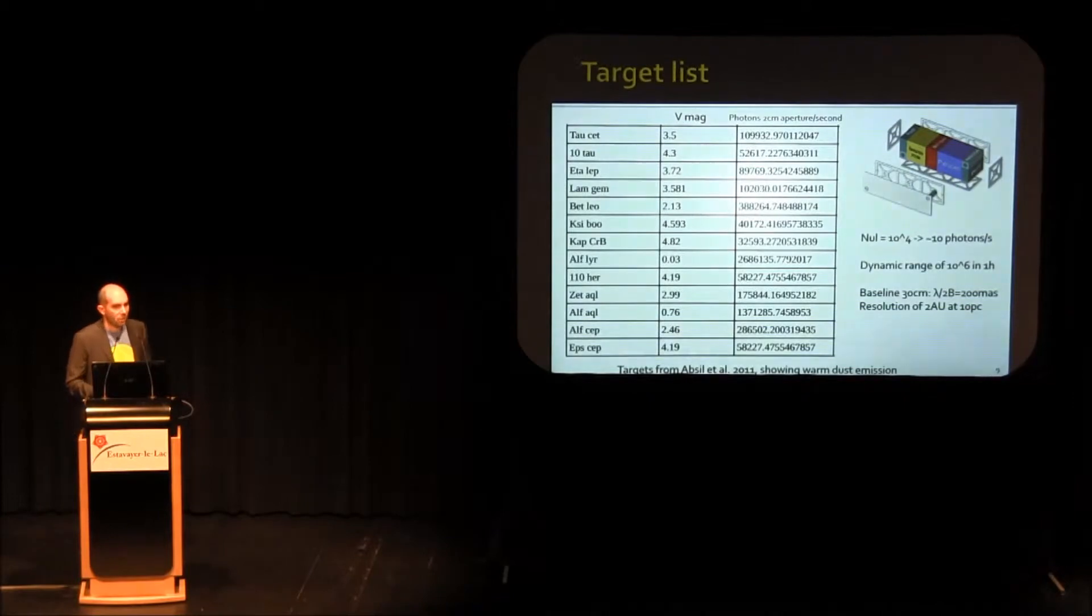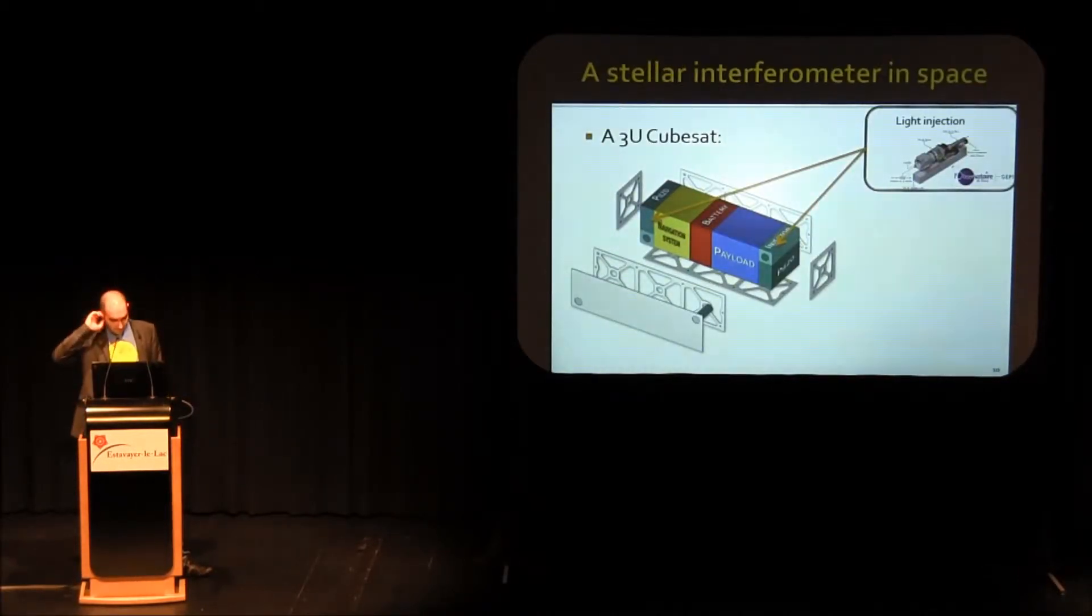The first step of the project to show it was doable was to start with the target list. The target list was not difficult to obtain, since we already have mid-infrared observations of the thermal light. We have a bunch of targets, we know their magnitude, we know where they are, and we know how much photons we can collect with two centimeter apertures. The idea is to have a CubeSat which is a 30 centimeter interferometer with two apertures of two centimeters in size.